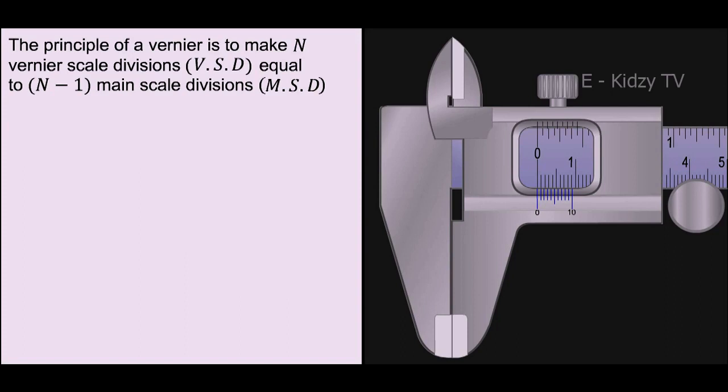Thus, the principle of a Vernier is to make N Vernier scale divisions (VSD) equal to N minus 1 main scale divisions (MSD). Therefore, we have N Vernier scale divisions equal to N minus 1 main scale divisions.